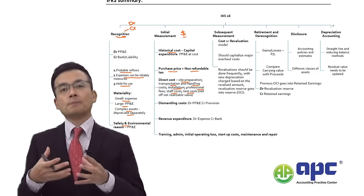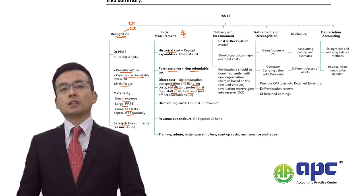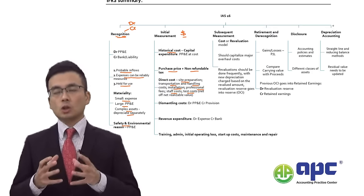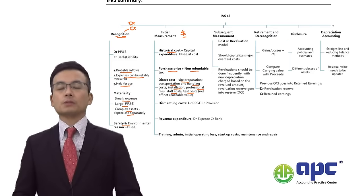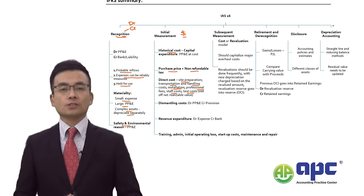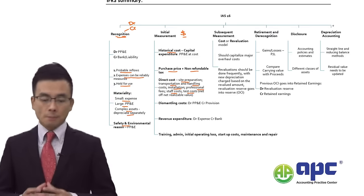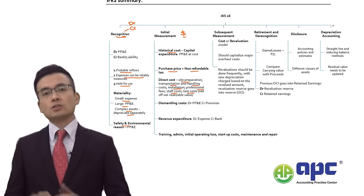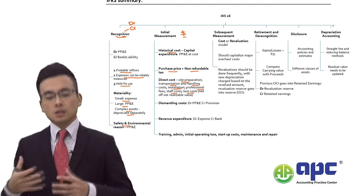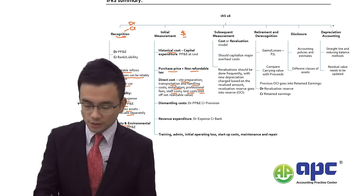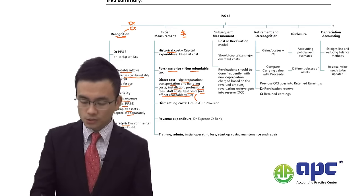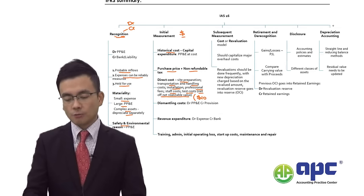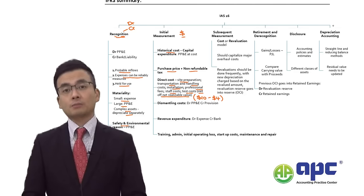Test costs for testing the equipment by inputting materials before final acceptance also need to be capitalized. However, if those materials become a finished product that can be sold, we net off the net realizable value — so if we input $10 in raw materials but the finished product sells for $4, only the net $6 is capitalized.